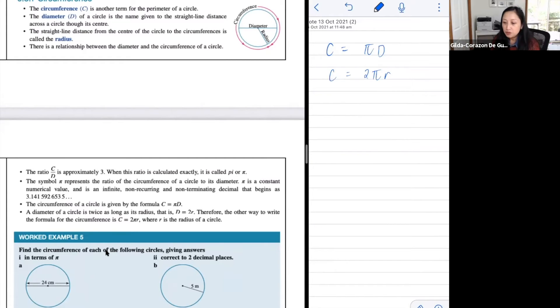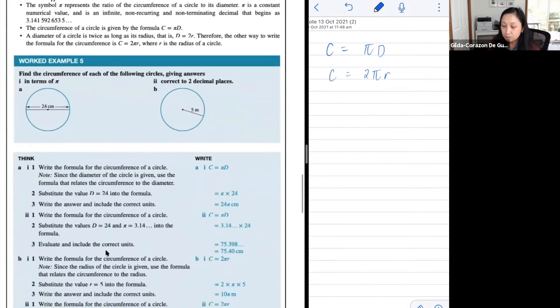So let's have a look at the examples here. What we want to find would be the circumference of these circles. But look, they want you to express your answers into two different ways. One is that it's in terms of π and the other one to two decimal places. The second one would be quite easier because we know how to round decimals. But what does it mean when you say in terms of π?